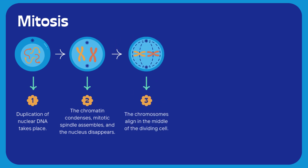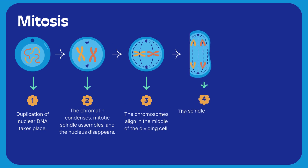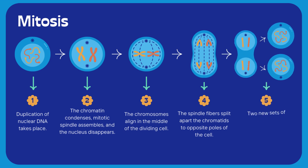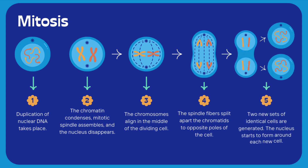Stage 3: chromosomes align in the middle of the cell. Stage 4: spindle fibers separate chromatids to opposite poles. Stage 5: two new sets of identical cells are formed, with the nucleus reforming around each.